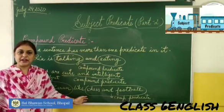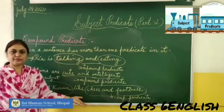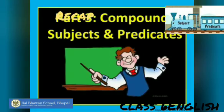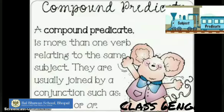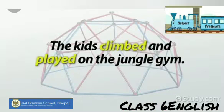It is interesting! Let's have a recap of today's topic. A compound subject is a simple subject made up of more than one noun or pronoun, joined by conjunctions like 'and' or 'or.' For example: 'Meat and fish provide protein for the body.' A compound predicate is more than one verb relating to the same subject, usually joined by conjunctions such as 'but,' 'and,' or 'or.' For example: 'The kids climbed and played on the jungle gym.'